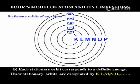Each stationary orbit corresponds to a definite energy. These stationary orbits are designated by K, L, M, N, O and so on.